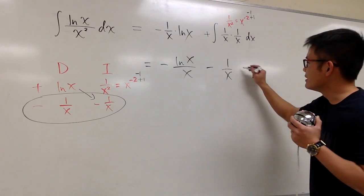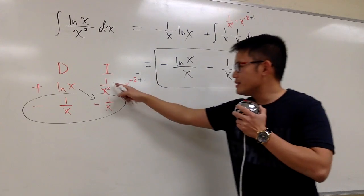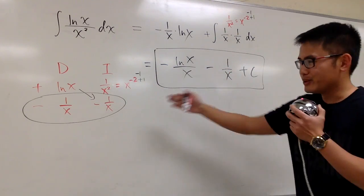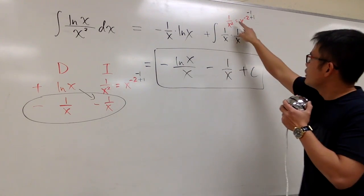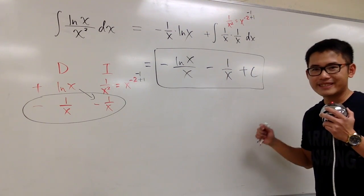This is it. This is the answer. So, we put a plus C, like that. And you see, we used this twice, actually. So, you can also look at this earlier. Integral 1 over x squared is just negative 1 over x. Well done. That's it.